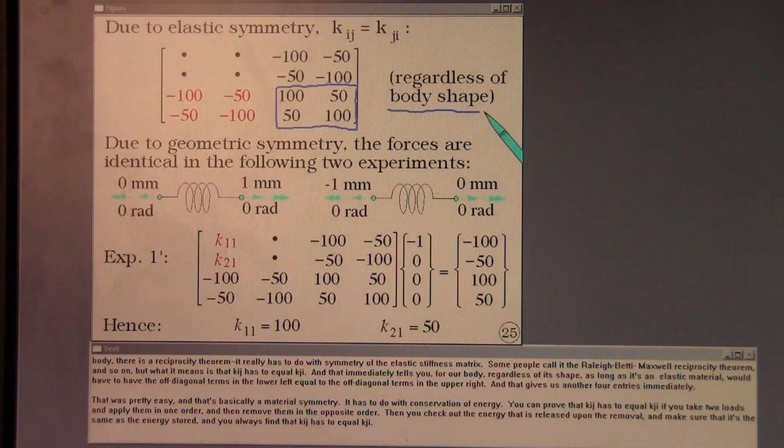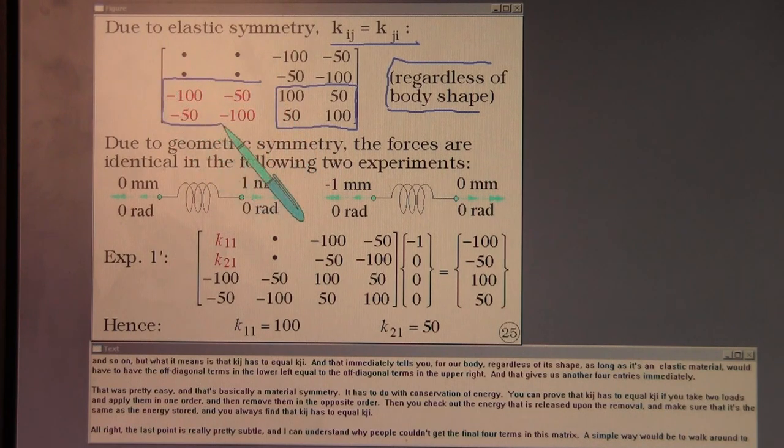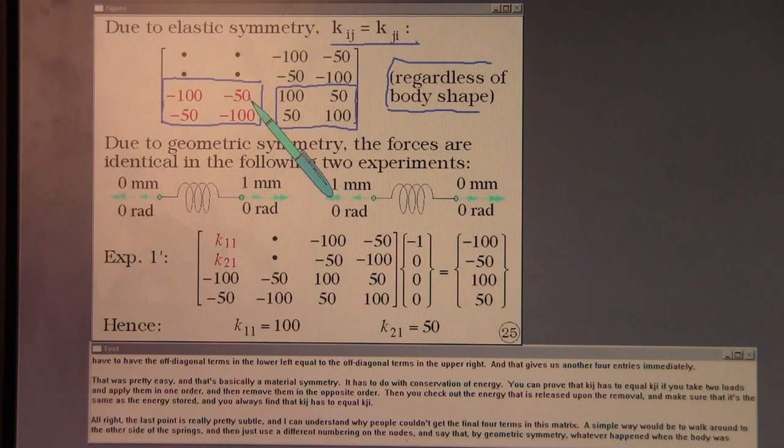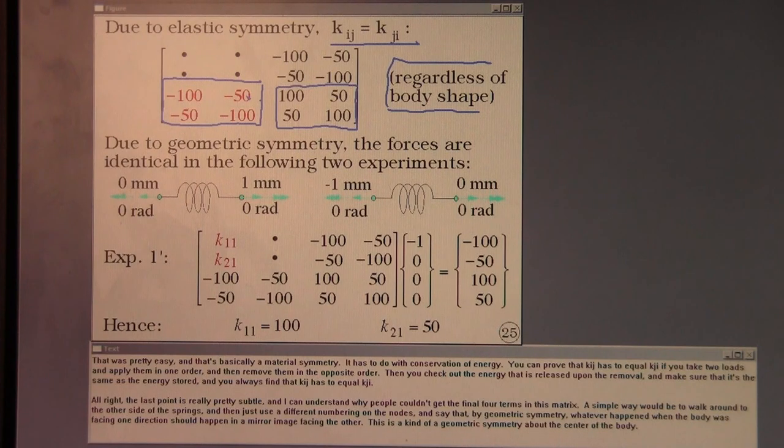Now, regardless of the shape of the body, there is a reciprocity theorem. It really has to do with symmetry of the elastic stiffness matrix. Some people call it the Raleigh-Betty-Maxwell reciprocity theorem, and so on. But what it means is that Kij has to equal Kji. And that immediately tells you for our body, regardless of its shape, as long as it's an elastic material, we would have to have the off-diagonal terms in the lower left equal to the off-diagonal terms in the upper right. And that gives us another four entries immediately. That was pretty easy, and that's basically a material symmetry. It has to do with conservation of energy. You can prove that Kij has to equal Kji if you take two loads and apply them in one order and then remove them in the opposite order, and then you check out the energy that is released upon removal and make sure that it's the same as energy stored. And you always find that Kij has to equal Kji.